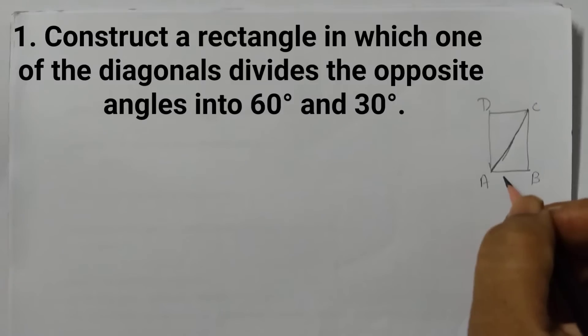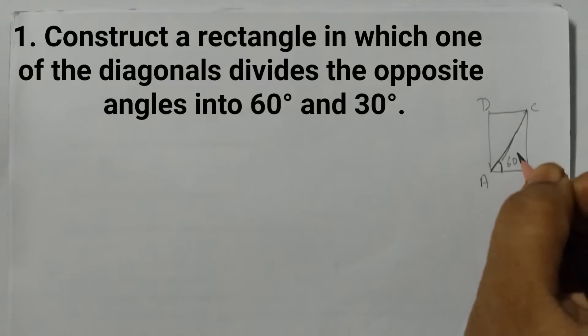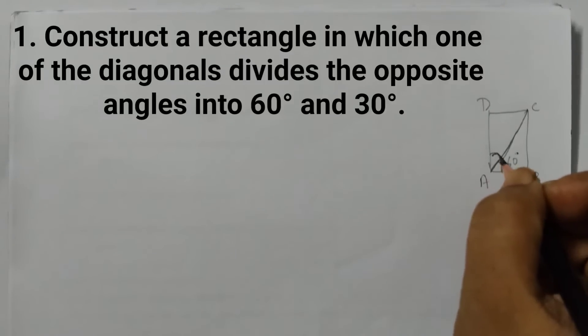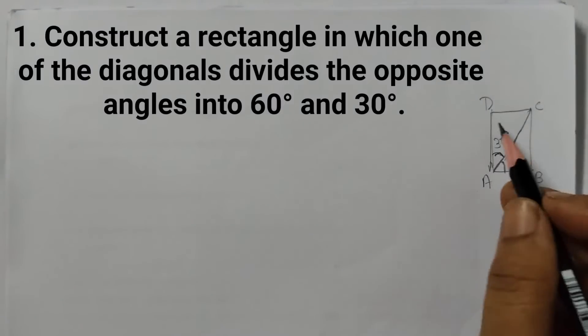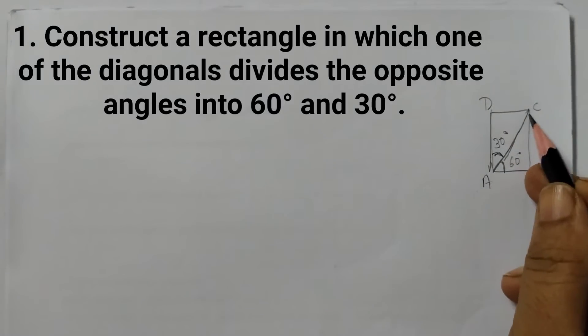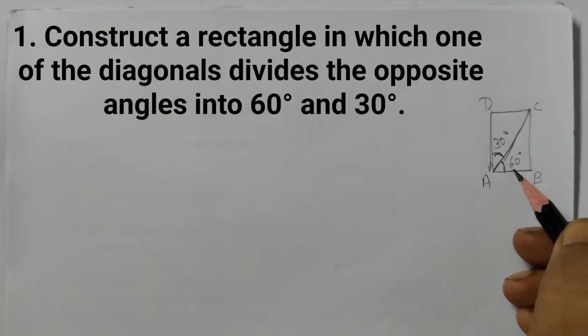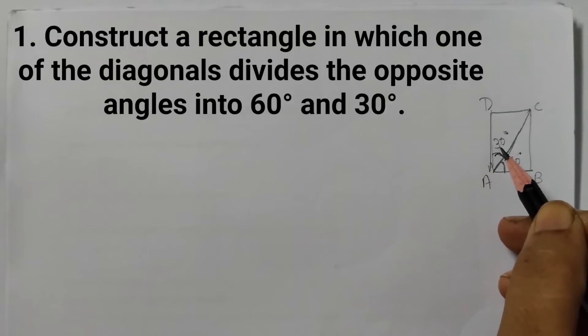We need to construct a rectangle such that this angle, one of the angles is 60 degrees and the other angle here is 30 degrees. ABCD is a rectangle. AC is the diagonal. This angle is 60 degrees and this is 30 degrees. And that's what we are going to construct now.